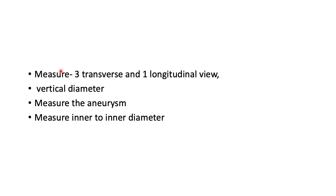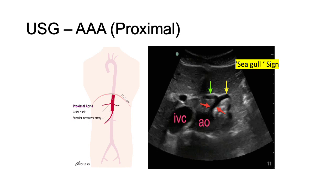You must scan the entire aorta. When measuring the size of the aorta, take a vertical diameter from anterior to posterior, ensuring the aneurysmal part is measured. The measurement is taken from inner to inner diameter. The proximal part of the triple-A assessment focuses on the abdominal aorta where the celiac trunk comes out and divides into the hepatic and splenic arteries, giving a view called the seagull sign.